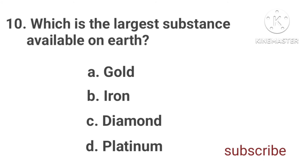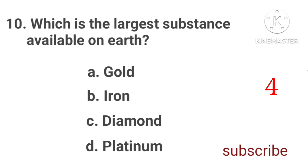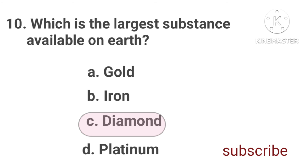Which is the largest substance available on earth? Option A: Gold. Option B: Iron. Option C: Diamond. Option D: Platinum. The correct answer is Option C.